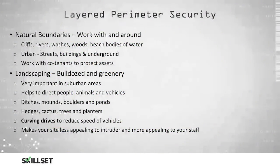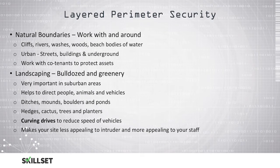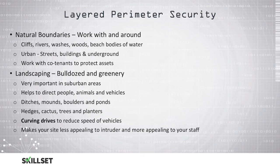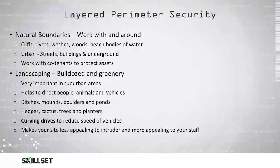When designing your facility, you can use a layered perimeter security approach. You can work with any natural boundaries near the facility, such as cliffs, woods, beaches, or bodies of water. In urban areas, you can use streets, buildings, and even underground access. You can also work with any co-tenants you have in order to protect both companies' assets. Landscaping can also make your facility more desirable and deter individuals from attempting to access your facility without authorization.